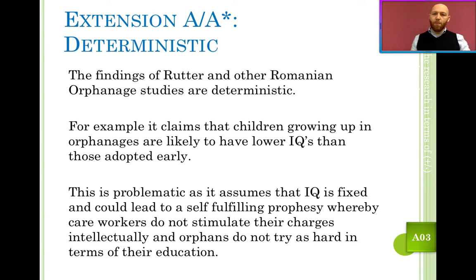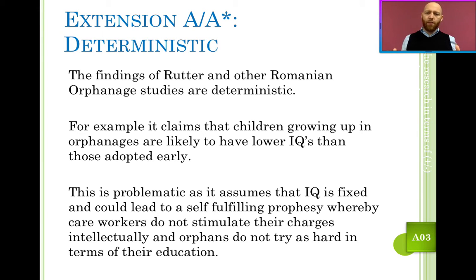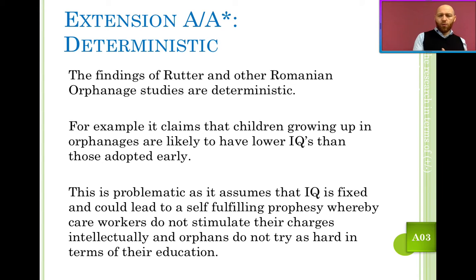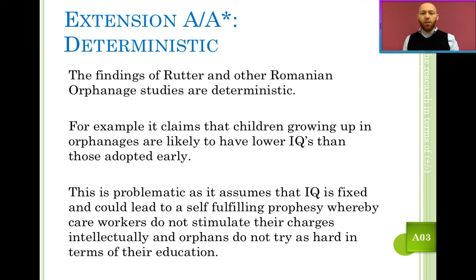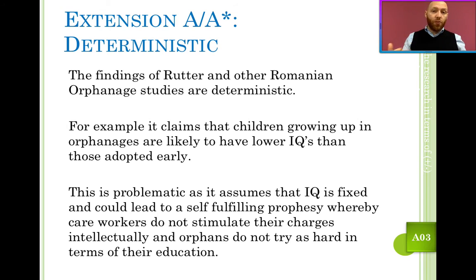We could also consider determinism. Rutter's findings suggest that being adopted early from an institution reduces the risk of disinhibited attachment and other consequences like low IQ. But is this deterministic — can it ever be fixed? Children in maternal deprivation studies who had IQs of 68 — is that doomed forever, or just a temporary effect? Even if it isn't permanent, it could lead to a self-fulfilling prophecy: if a child raised in an institution believes they're less intelligent, they may try less hard in school and ultimately prove themselves right.